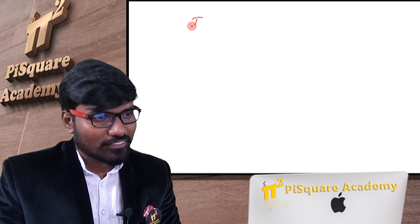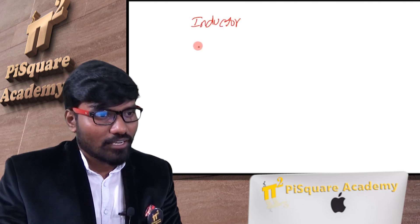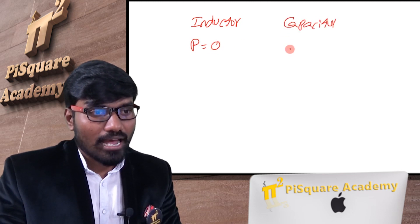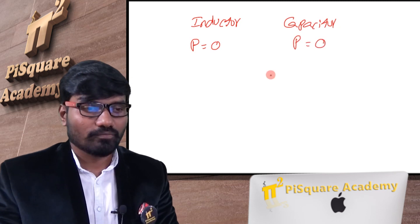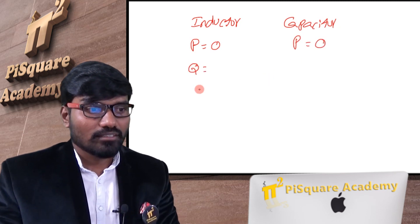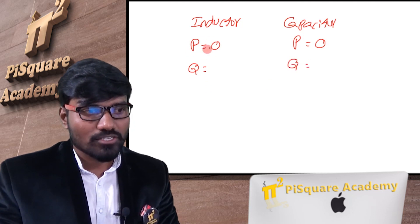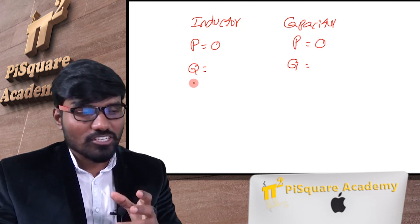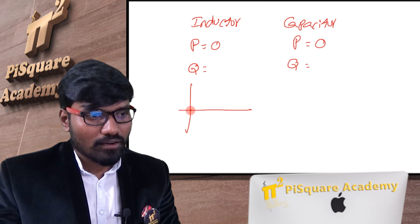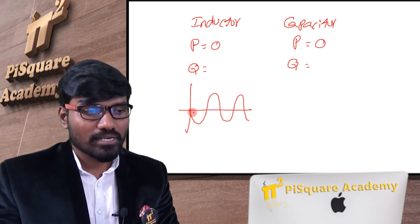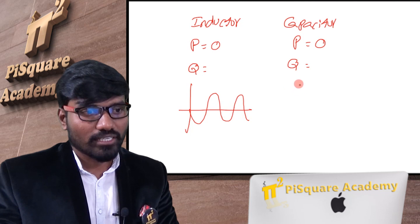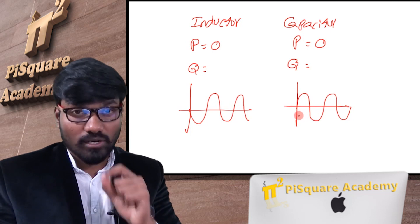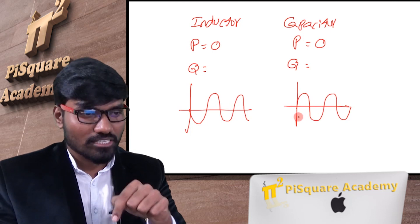Let me elaborate. In the case of an inductor, the active power consumed is zero. For a capacitor also, the active power consumed is zero. The instantaneous power of an inductor is a symmetric sinusoid — I've explained what this sinusoid is in another lecture, which you can check in the Y series lectures in the description below. The instantaneous power of a capacitor is also a symmetric sinusoid.